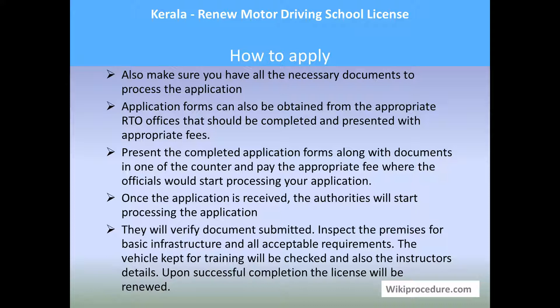Present the completed application form along with the documents to one of the officers. He will check the details and if anything is needed he will advise you; otherwise he will mark the amount and the counter at which you need to pay. Go to the counter and pay the fees. Once it is accepted, the authorities will start processing the application. They will verify documents submitted, inspect the premises for basic infrastructure requirements, check the vehicle kept for training, and verify the instructor's details. Upon successful completion of all due diligence, the license will be renewed.